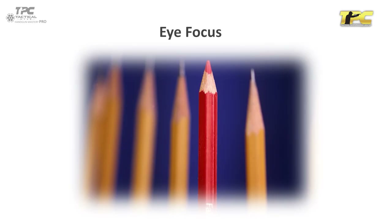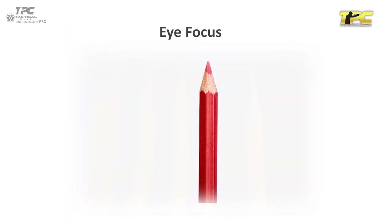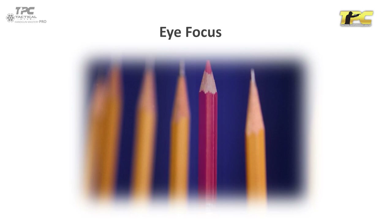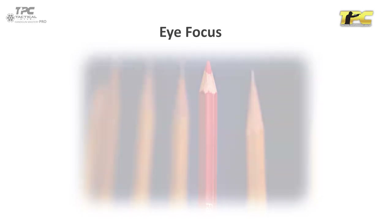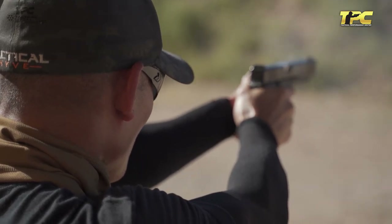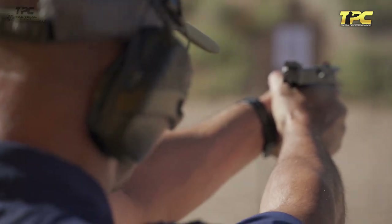The eyes can only focus on one object at a time. We call this object the point of focus. The rest of the visual field that surrounds the point of focus is blurry — we call it the peripheral vision field. We use this to obtain visual acceptability inputs. As shooters, we deal with the same phenomena when using iron sights. The point of focus can vary. Here are some examples.